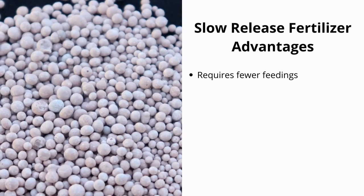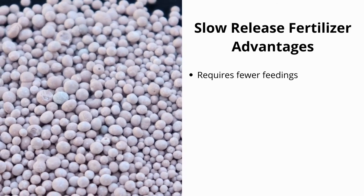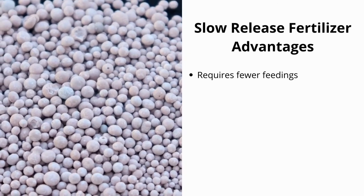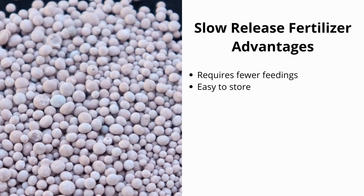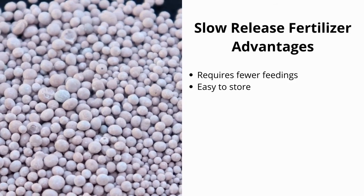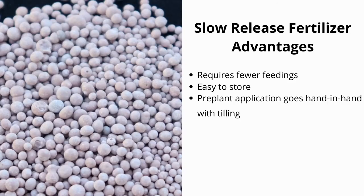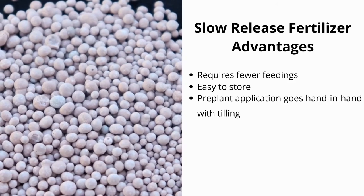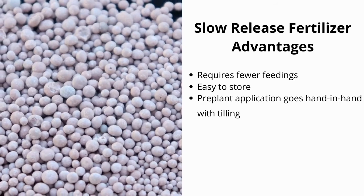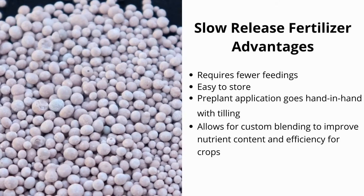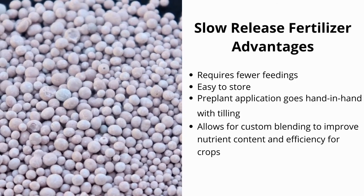Some of the significant advantages of using slow-release fertilizer include: requires fewer feedings, often only one prior to planting; easy to store without any loss of efficacy; pre-plant application goes hand in hand with tilling; allows for custom blending to improve nutrient content and efficacy for crops; and does not require any additional equipment.